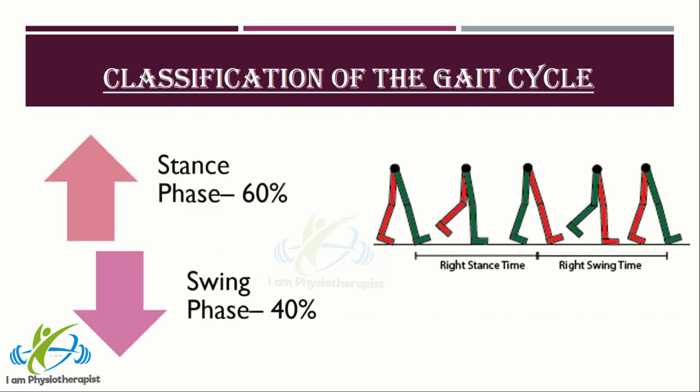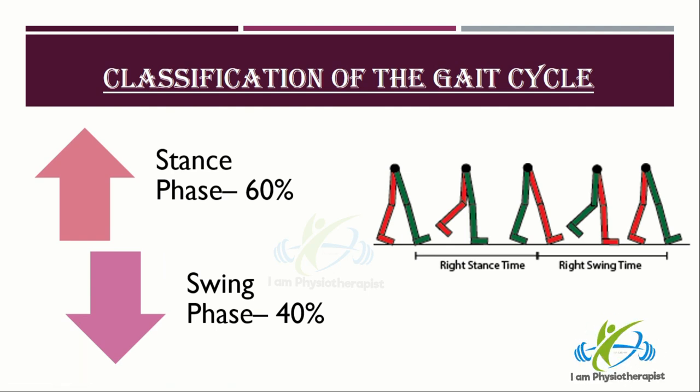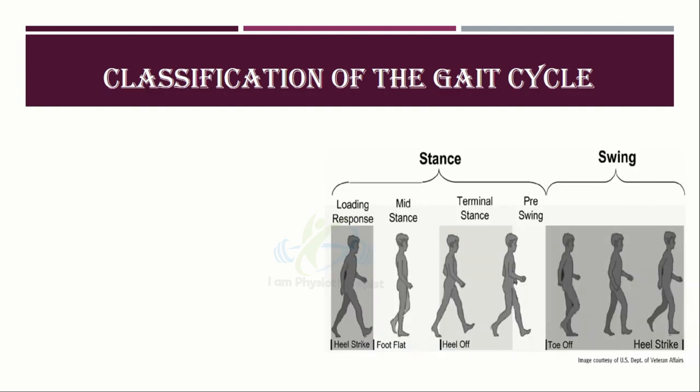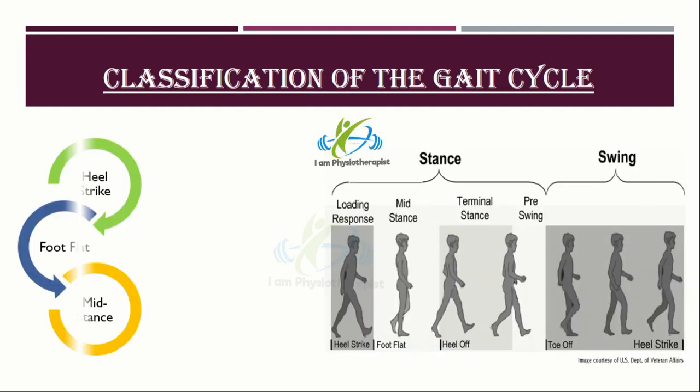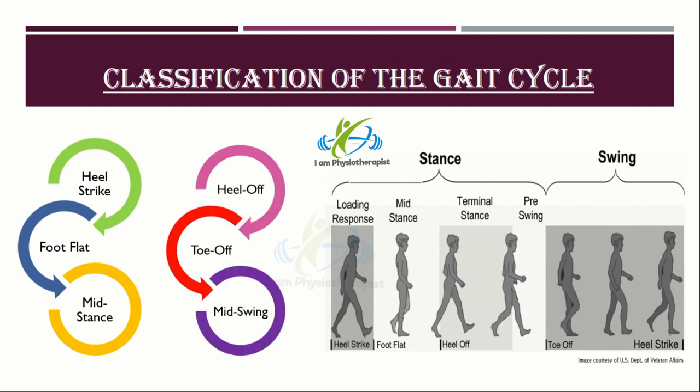Classification of the gait cycle involves two main phases: stance phase and swing phase. The stance phase occupies 60% of the gait cycle, while the swing phase occupies only 40% of it. A more detailed classification of gait recognizes six phases: heel strike, foot flat, mid-stance, heel off, toe off, and mid-swing.